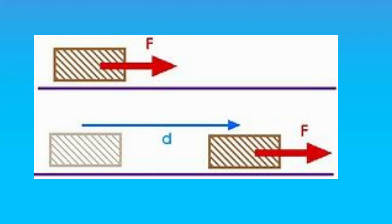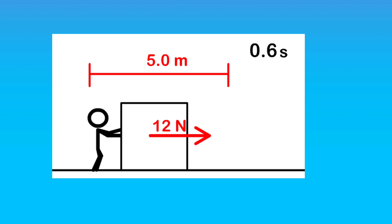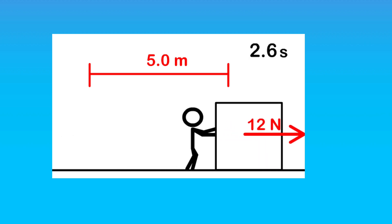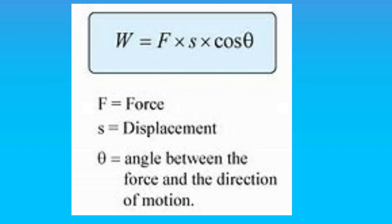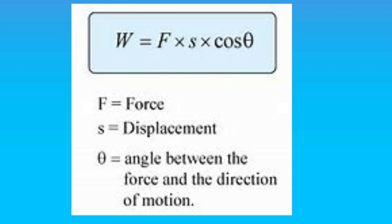The displacement should be in the direction of the force applied — the direction of force and direction of displacement should be parallel to each other. Then only we say work is done in terms of physics. As per definition, work done on a body is defined as the product of the force applied on the body and the displacement of the body parallel to the direction of force applied. So the formula of work is W = F·s·cosθ, where W is work, F is force applied, s is displacement, and θ is the angle between force applied and displacement.